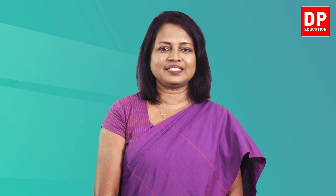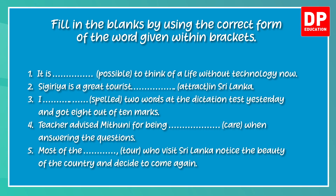Let's check your answers. Read the first one: 'It is blank possible to think of a life without technology now.' You need the opposite of the word given, so you have to add a prefix. The answer is 'impossible' — 'It is impossible to think of a life without technology now.' For the second one, you need a noun. 'Sigiriya is a great tourist attraction in Sri Lanka.' You have to add the suffix '-ion' to the root word 'attract' to form 'attraction'.